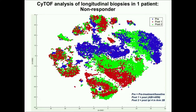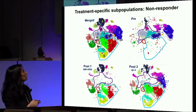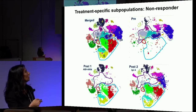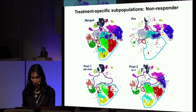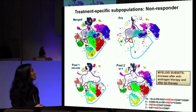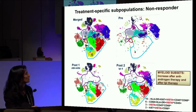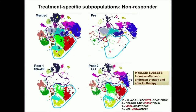This is a CyTOF analysis of longitudinal biopsies done in one patient over time in the protocol. The blue is pre-treatment, the red is post-hormonal therapy, and the green is after immunotherapy. In the pre-treatment samples, certain subsets did not exist, and then all of a sudden they started to exist with hormonal therapy treatment and persisted after anti-CTLA4 immunotherapy. This patient is a non-responder. Those subsets we were interested in all turned out to express this novel marker VISTA — they were all VISTA-positive subsets we could see in the CyTOF.